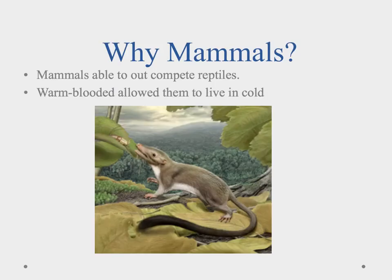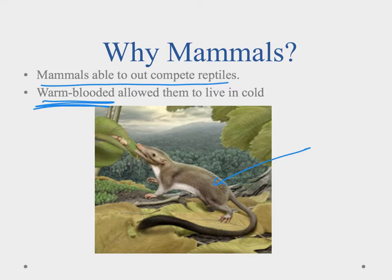So why were the mammals so successful? For them to be successful, they had to be able to out-compete the reptiles. One of the key features that allowed them to do this was the fact that they were warm-blooded. They had hair and fur covering which insulated them and allowed them to regulate their body temperature. Dinosaurs may have been cold-blooded, but they weren't warm-blooded.